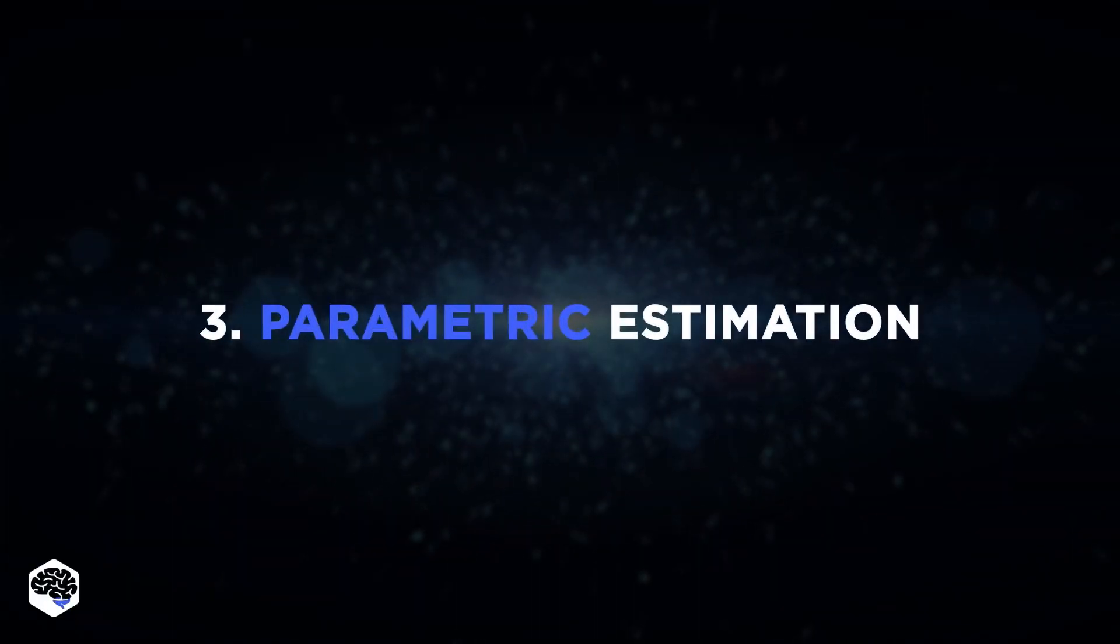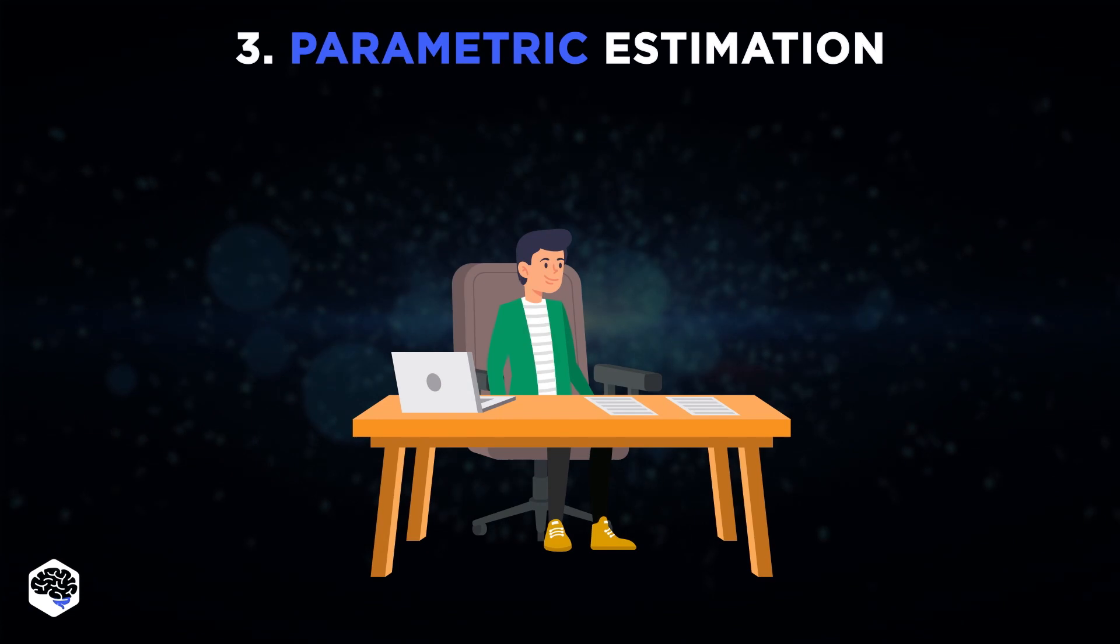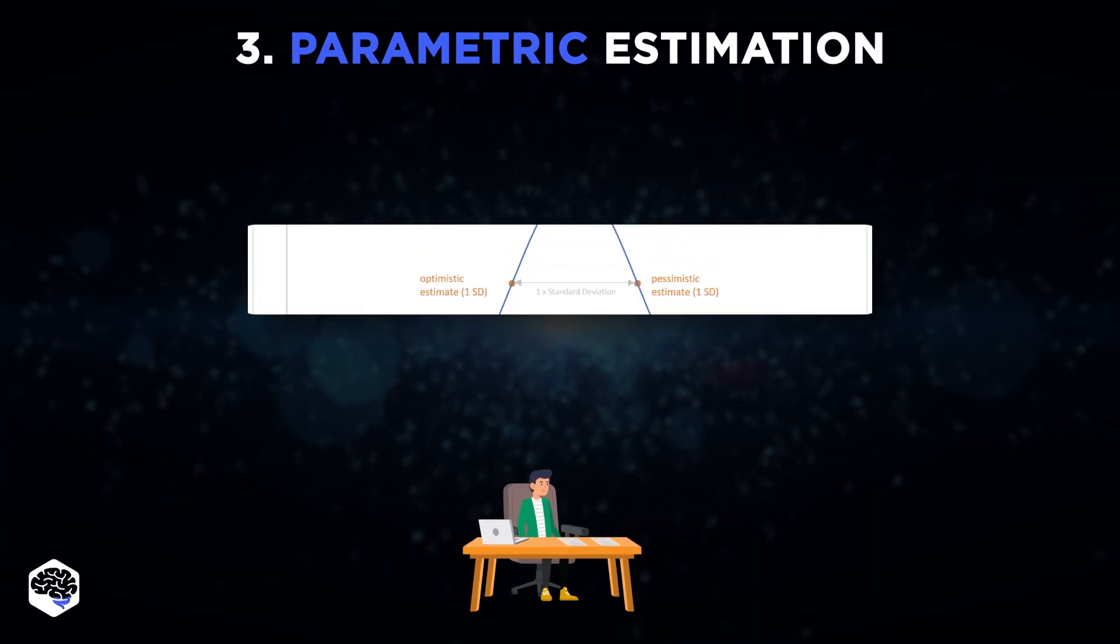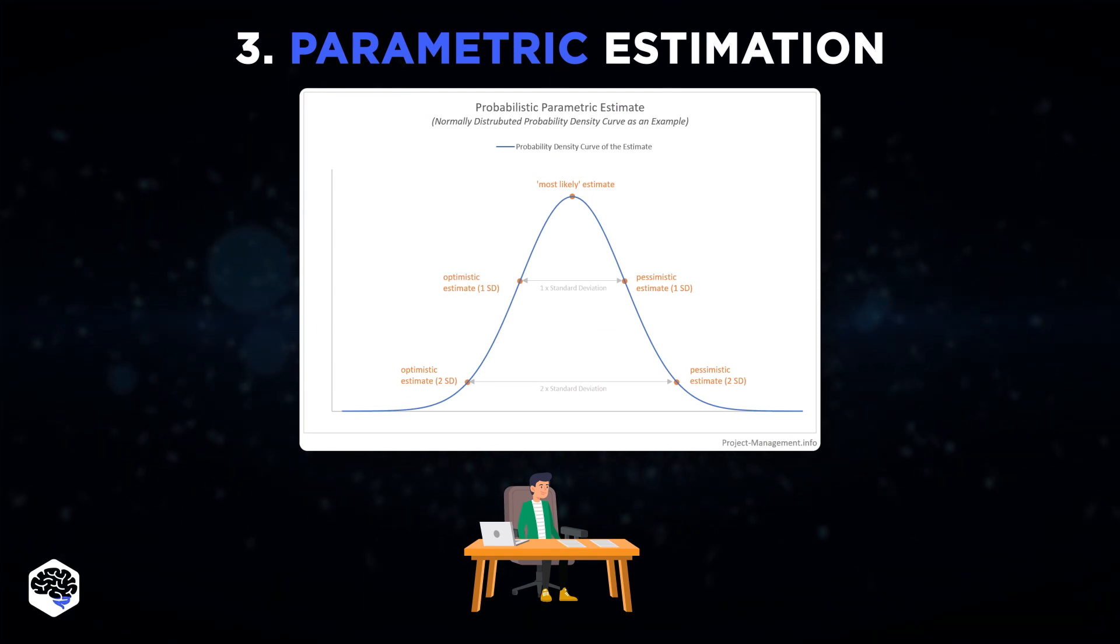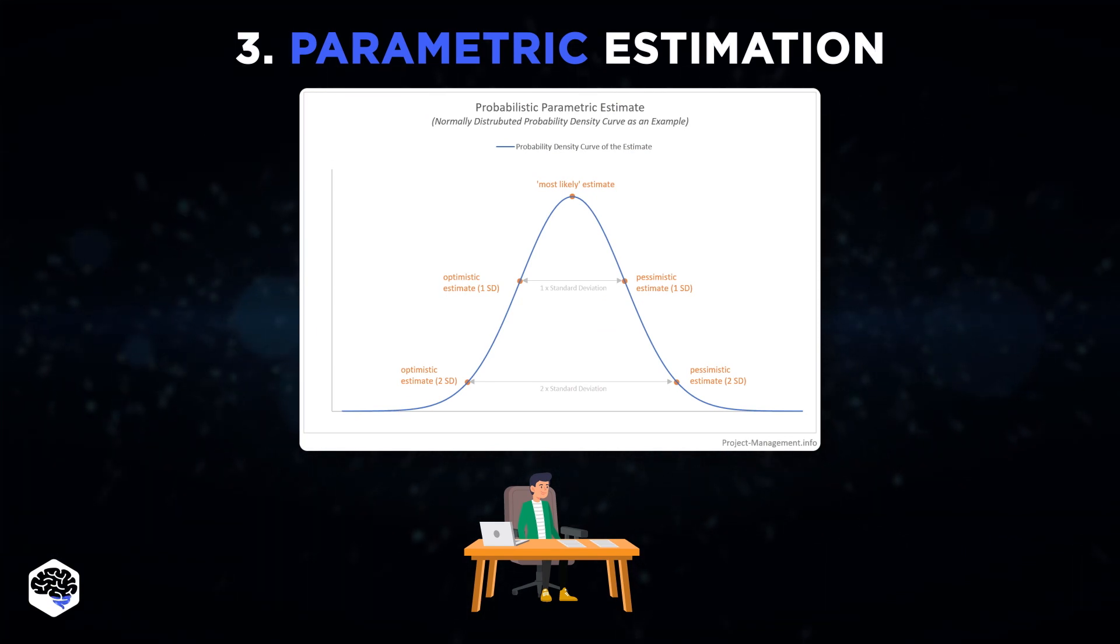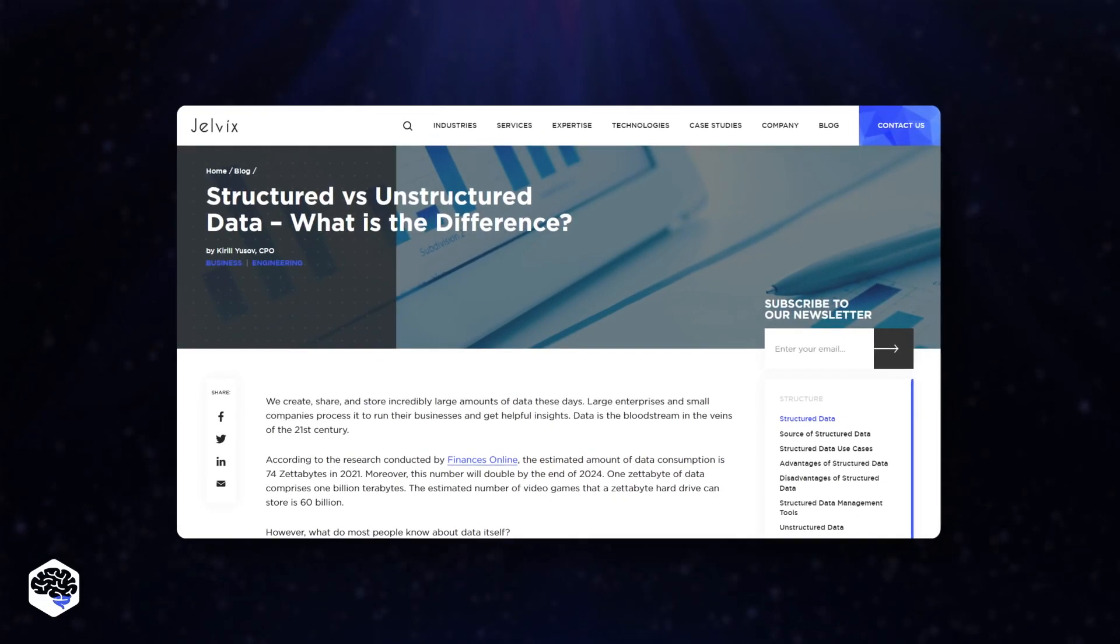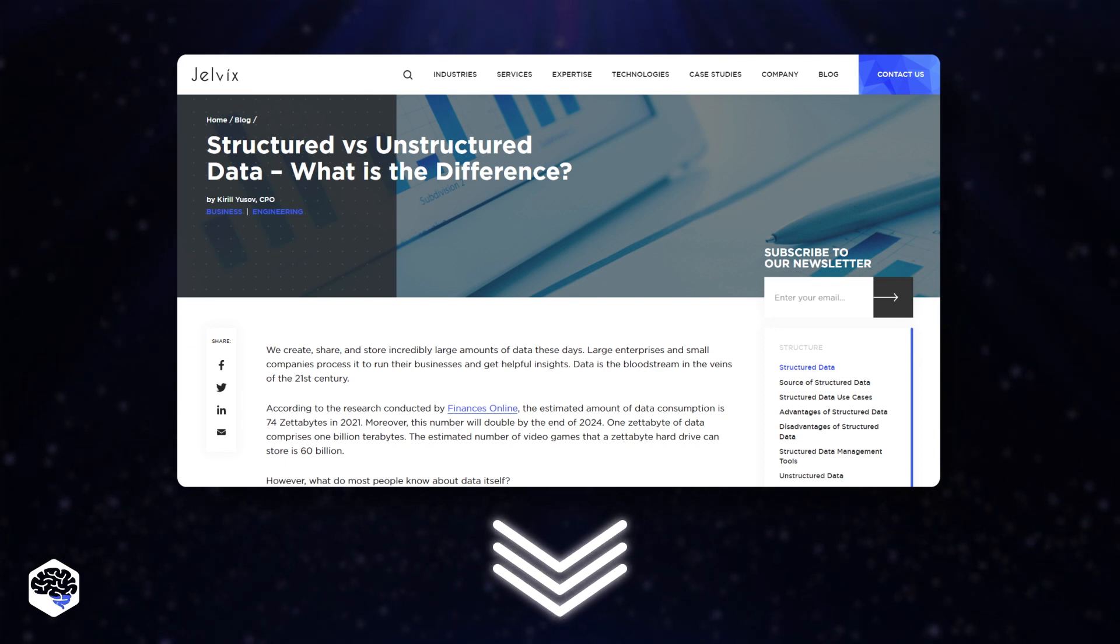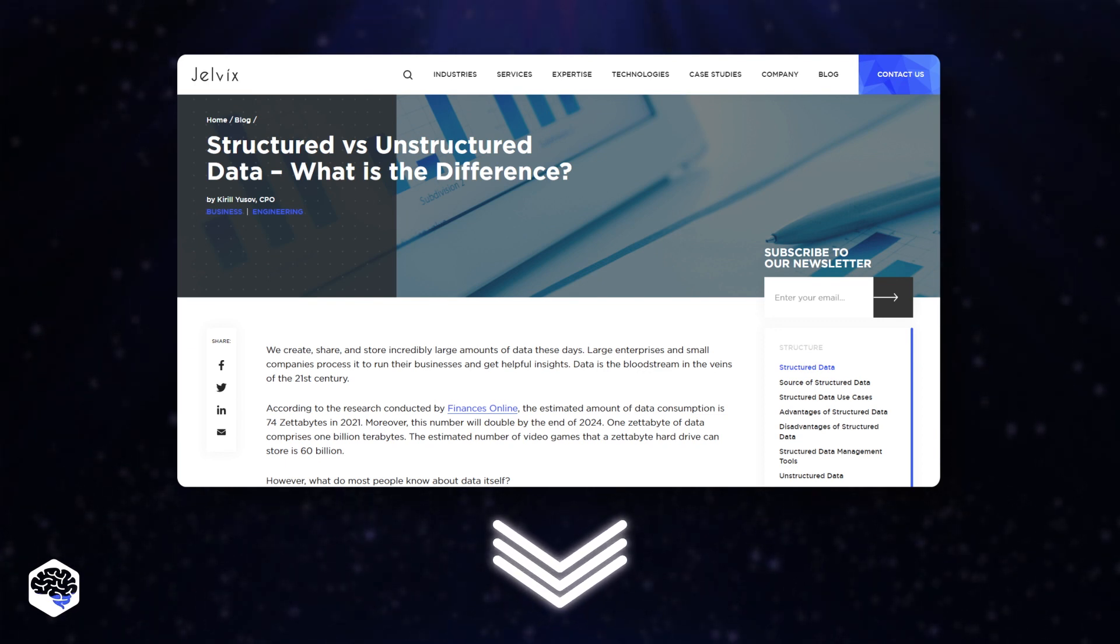The third method is Parametric Estimation. It's a statistical approach for determining the expected resource requirements. Input data is taken from previous projects or external or internal data sources, such as statistics. By the way, we highly recommend you read the article with the comparison of structured and unstructured data. The link is in the description.